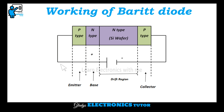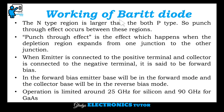It is forward biased — this P-type is connected to the positive terminal and this P-type is connected to the negative terminal. The N-type region is larger than both P-types, so punch-through effect occurs between these regions. Punch-through effect is the effect which happens when the depletion region expands from one junction to the other junction. When the emitter is connected to the positive terminal and the collector is connected to the negative terminal, it is said to be forward biased. In forward bias, the emitter-base will be in forward bias mode and the collector and the base will be in reverse bias mode.